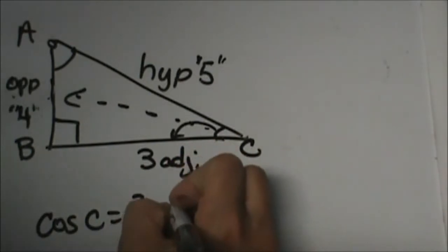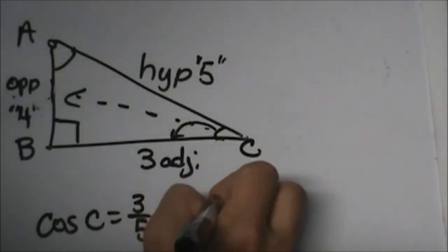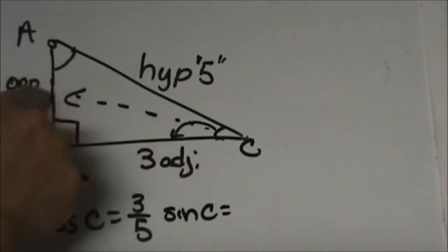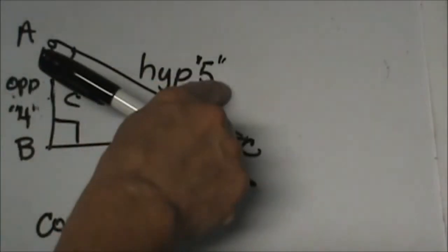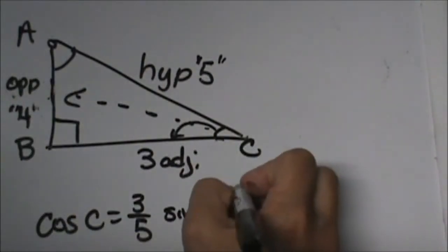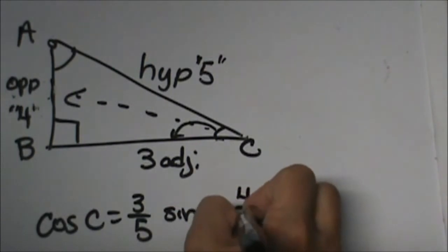Let's look at the sine of C. From angle C we are going to go opposite over hypotenuse. Opposite is 4 and hypotenuse is 5.